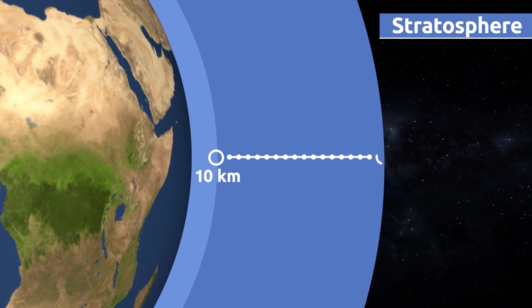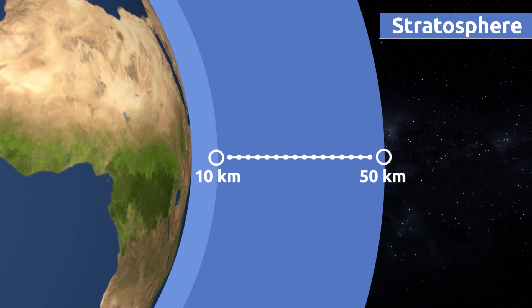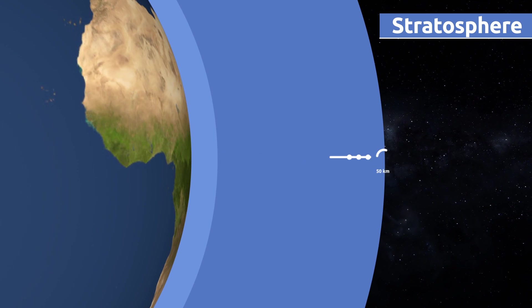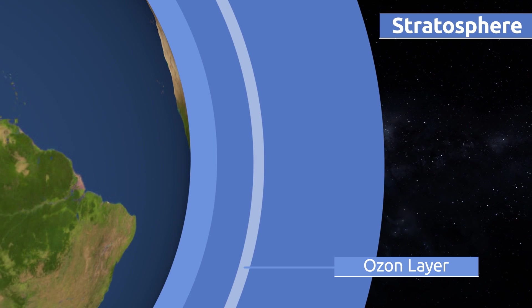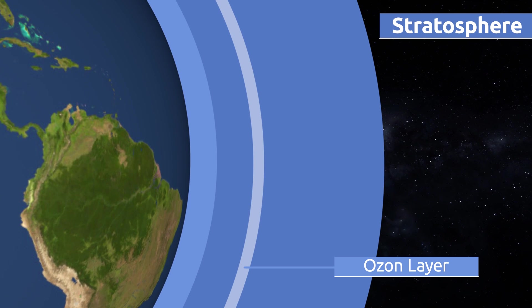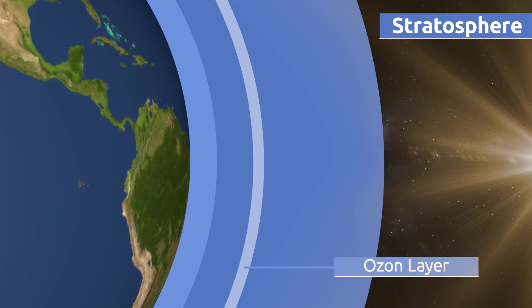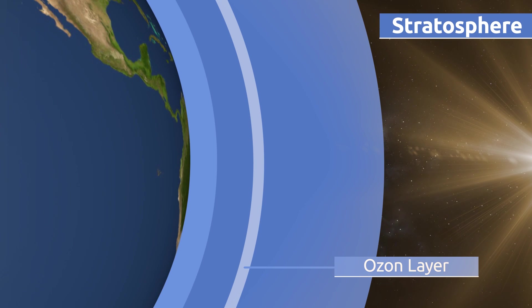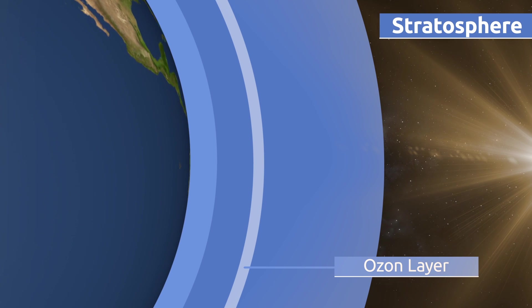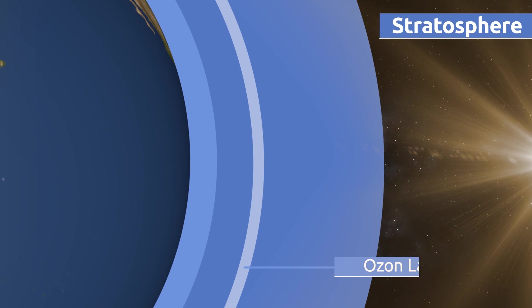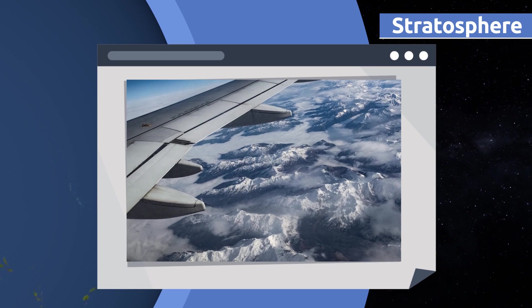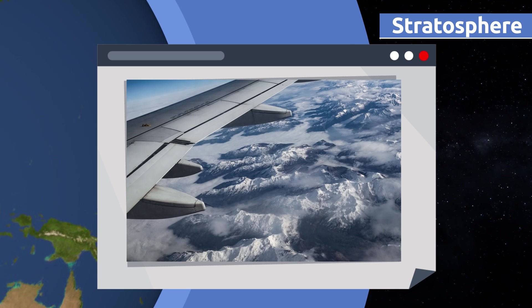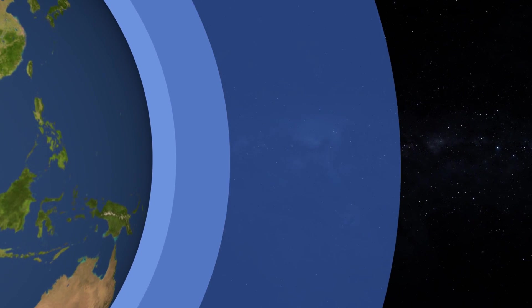The stratosphere extends to an altitude of 10 to 50 kilometers above sea level. The ozone layer is part of the stratosphere, and it's very important because it protects our planet from harmful UV sunlight rays. The ozone layer is getting thinner and thinner as air pollution rises. Did you know that airplanes fly in the stratosphere to avoid turbulence?